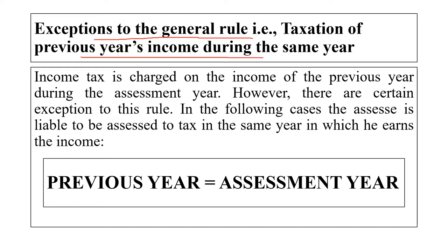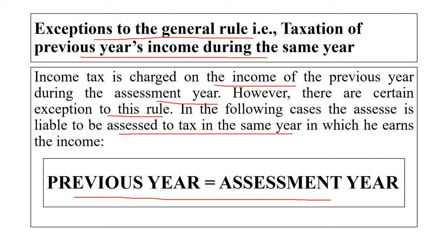As an exception to the general rule, income tax is normally charged on income of the previous year during the assessment year. However, in certain cases, the assessee is liable to pay tax in the same year in which income is earned, so for them the previous year equals the assessment year. Normally, income earned in the previous year is taxed in the assessment year, but in some cases a person must pay tax on the same income during that previous year itself.